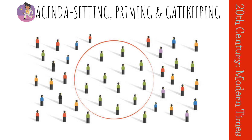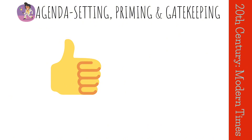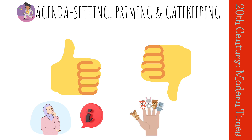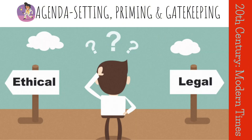The media's influence on our thoughts and opinions can have both positive and negative implications. On the positive side, the media can help us to stay informed about important issues and to make informed decisions. On the negative side, the media can also be used to manipulate and control public opinion.